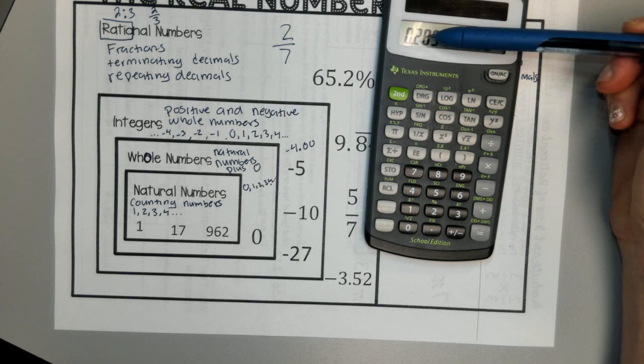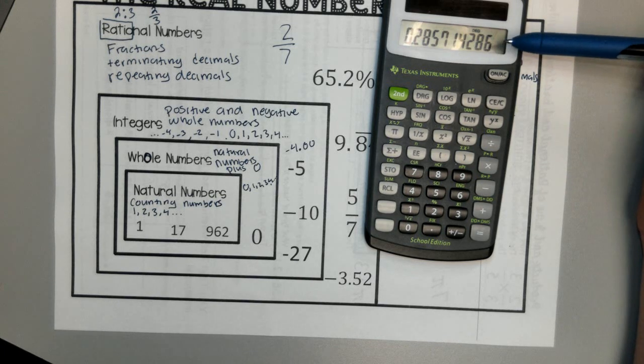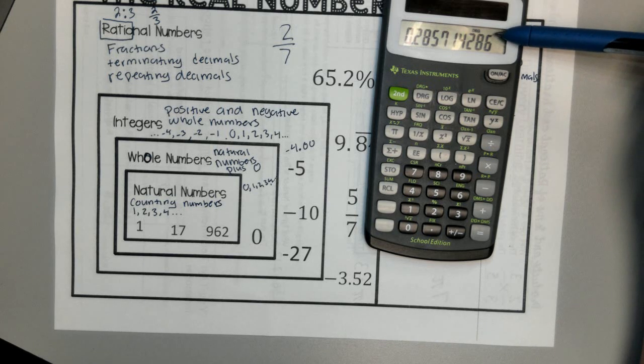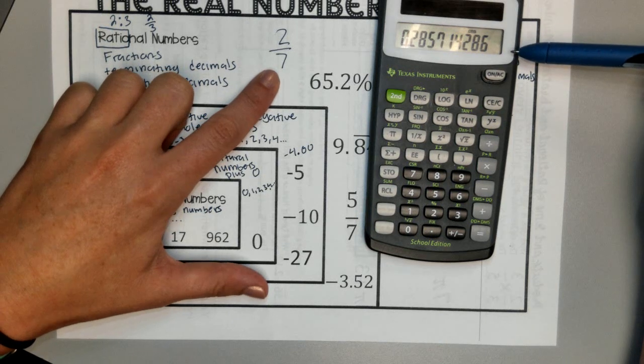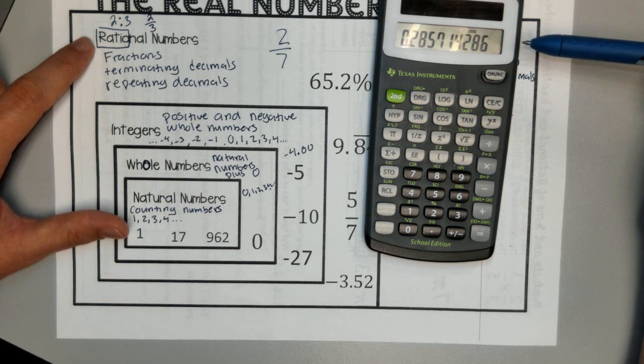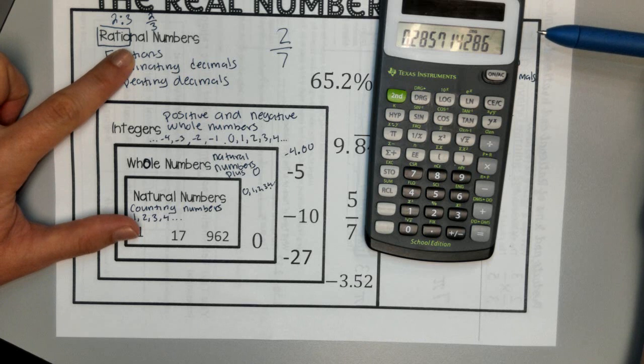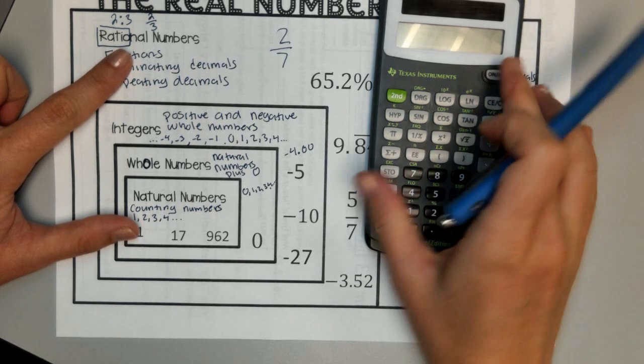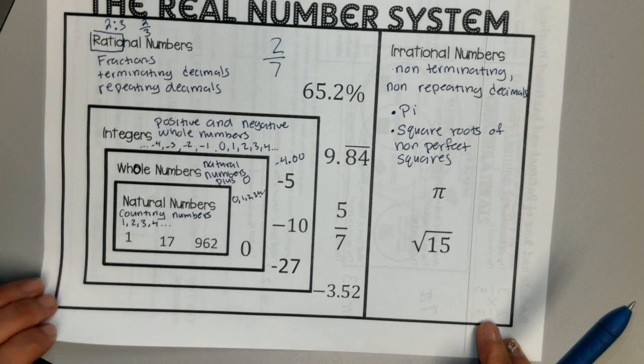So 2 sevenths is 2, 8, 5, 7, 1, 4, repeating. But the calculator rounds for you. So anytime you see a fraction, do not put that in your calculator and try and decide if it's rational. Because all fractions are rational. It's in the word. Ratio means fractions. All fractions are rational. Don't put them in your calculator.